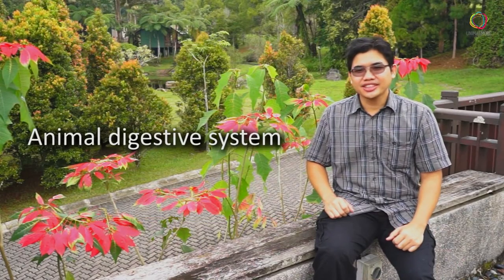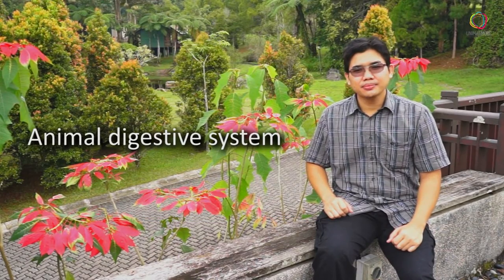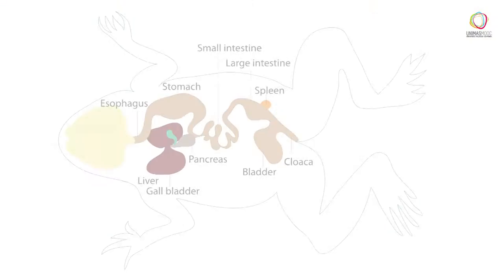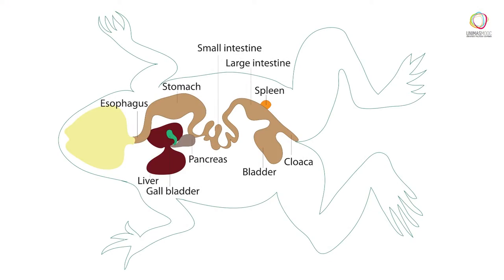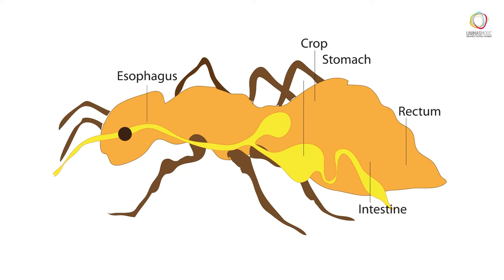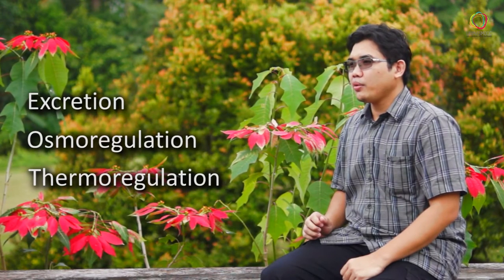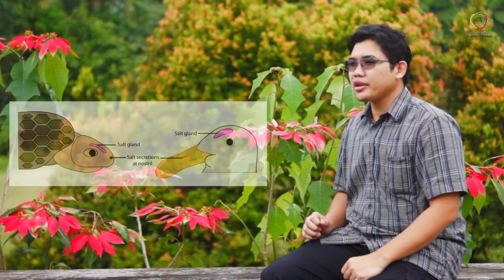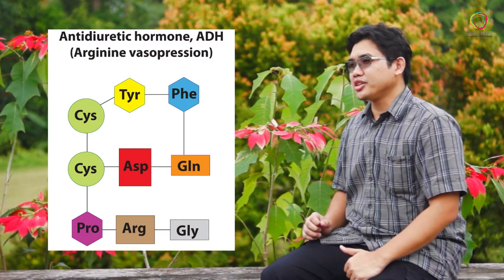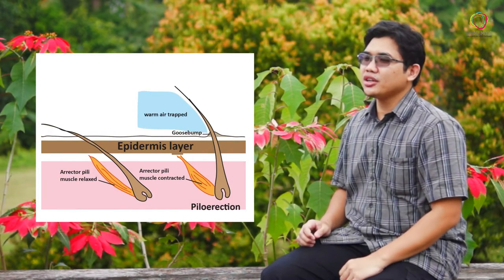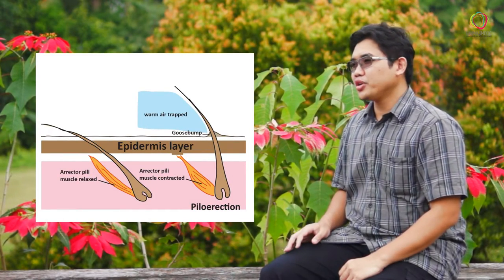This includes the Animal Digestive System, where we will discuss how animals obtain food, the processes that take place to digest the food and absorb the nutrients. Excretion, Osmoregulation, and Thermoregulation, where we will relate the process of removing metabolic waste, controlling osmotic balance, and regulating internal body temperature to maintain homeostasis.